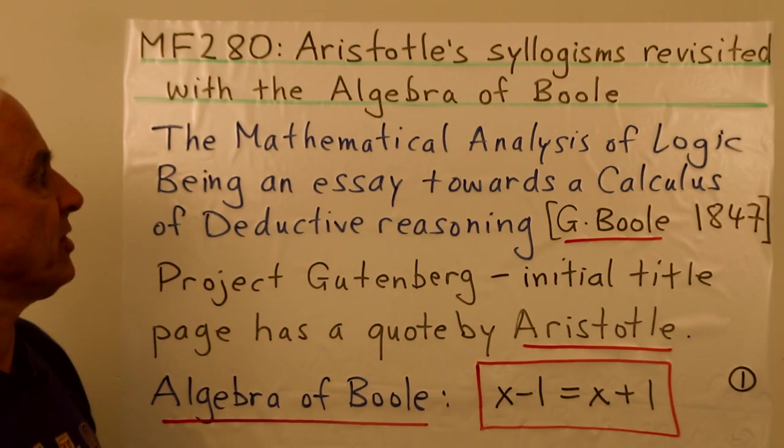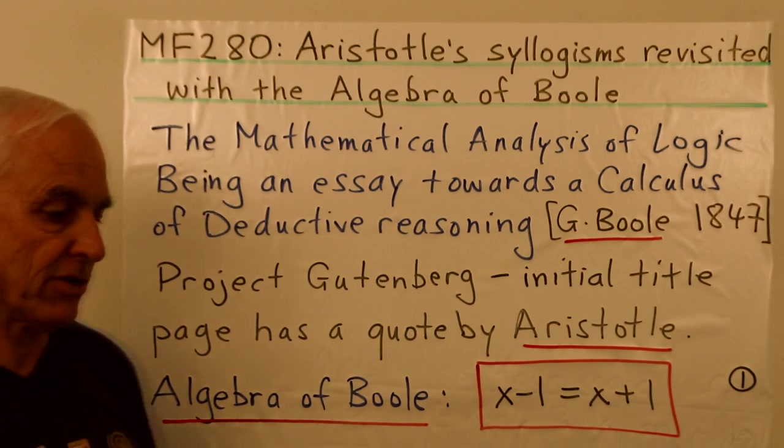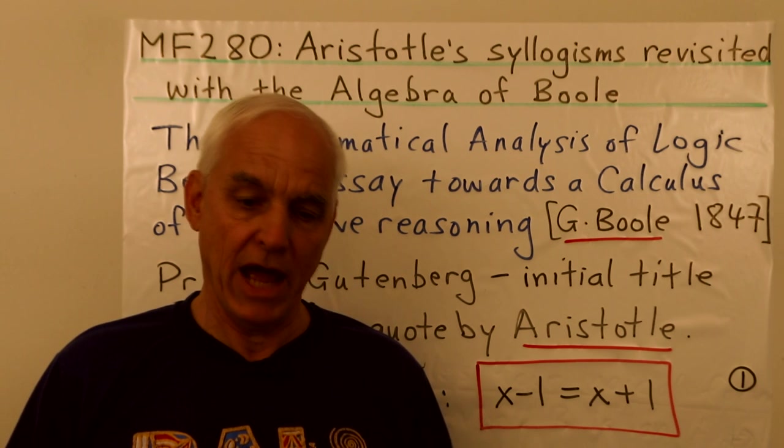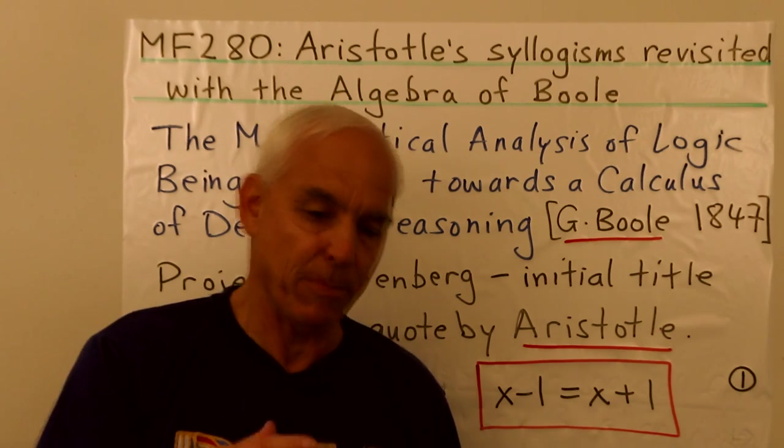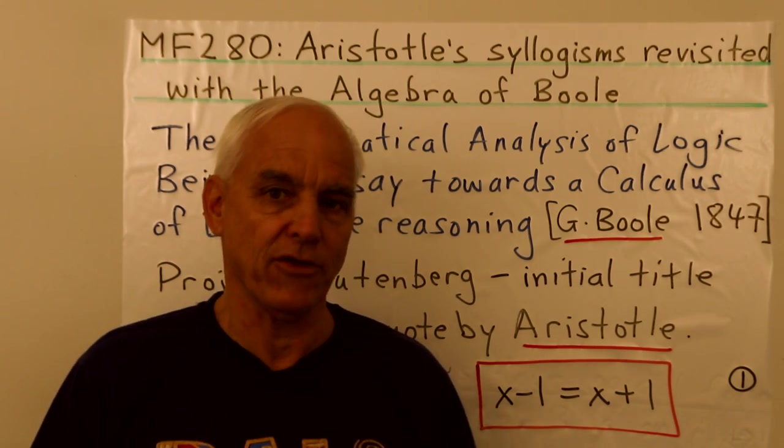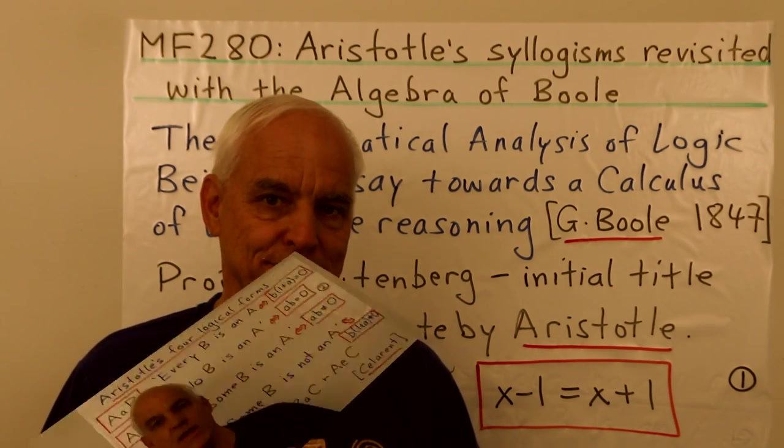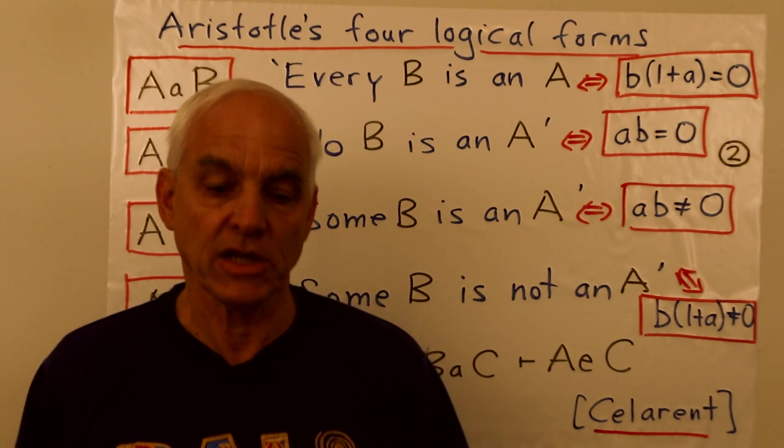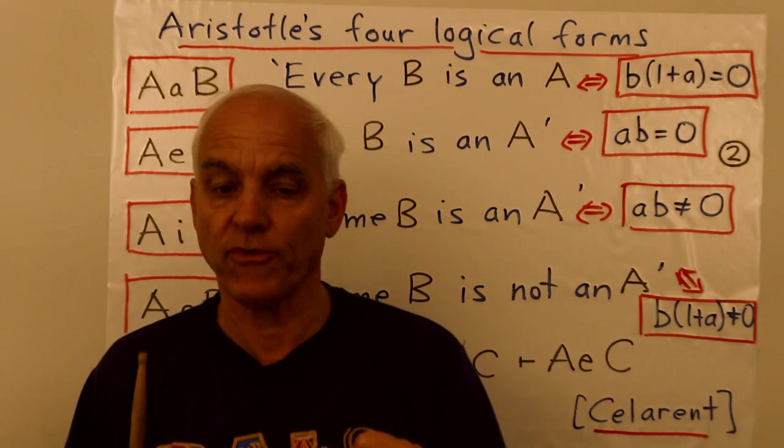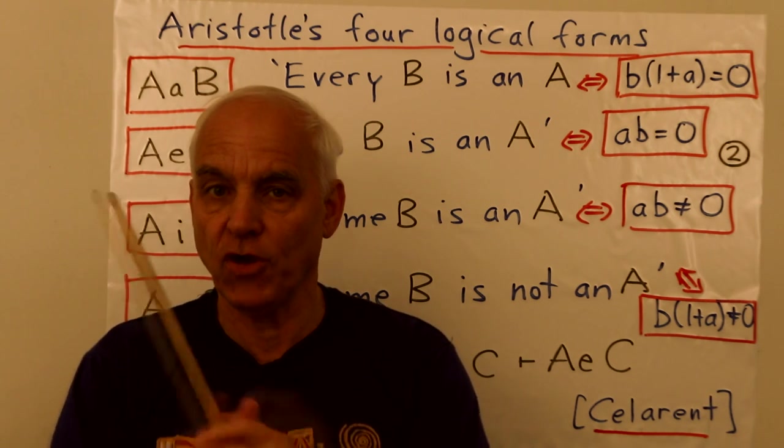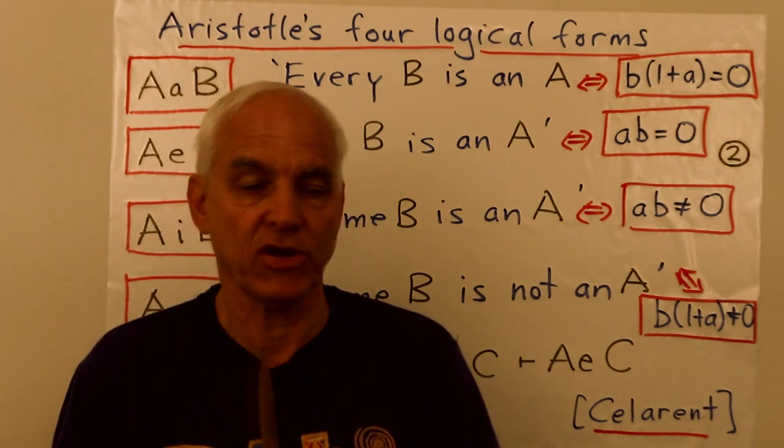So today, what I want to do is go back to the Aristotelian syllogisms and have a fresh look at them with our new understanding of propositional logic viewed from the eyes of the algebra of Boole. Aristotle's syllogisms rest on four fundamental logical forms, which are ways of combining pairs of elementary propositions.